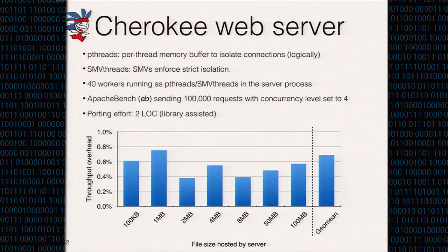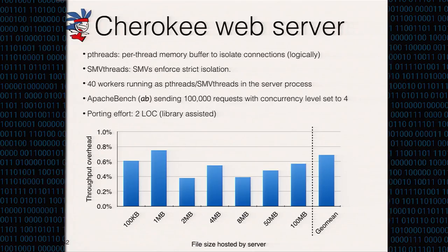To test real-world applications, we first look at multi-threaded web servers. We chose Cherokee because it uses per-thread memory buffers to isolate threads from remote connections. The SMV version of the web server automatically handles thread isolation with only two lines of code changes. The server has 40 threads by default to handle incoming requests concurrently. We used Apache Bench to send 100,000 requests with concurrency levels set to 4. The results show that the security-enhanced Cherokee server does not incur more than 1% of runtime overhead. We also ran experiments with Apache HTTP web server with file sizes up to 1 GB, and the overhead stays below 1%.